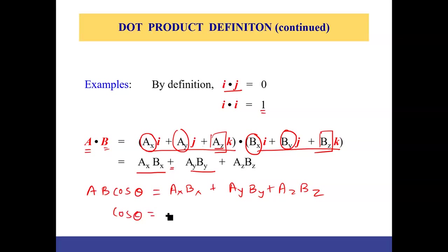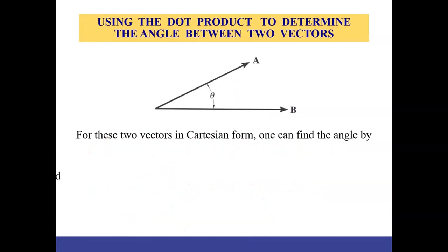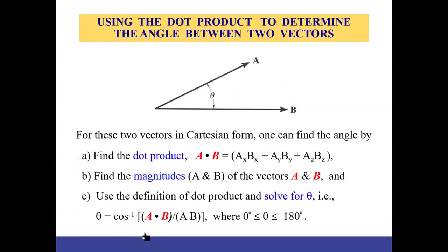Using these two expressions, we can solve for cosine theta: it equals (AₓBₓ + AᵧBᵧ + A_zB_z) divided by the product of the two magnitudes. Then we take the arccosine of the right-hand side to get angle theta. So theta = arccos(A·B / (|A||B|)), and the angle is always between 0 and 180 degrees.